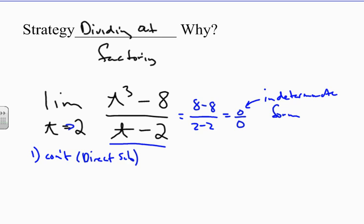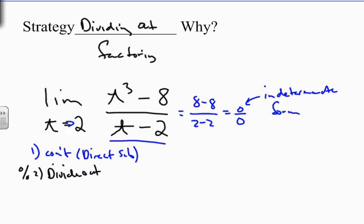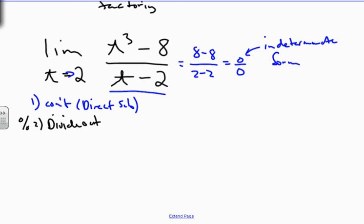Now here, t cubed minus 8 is kind of hard to factor. But because we have 0 over 0, we're going to divide this out. And I'm going to take t minus 2 and divide it into t cubed minus 8. To divide that out, I'm going to use synthetic substitution. So I'm going to take 2, and I'm going to take my 1. I got 0, 0, negative 8.